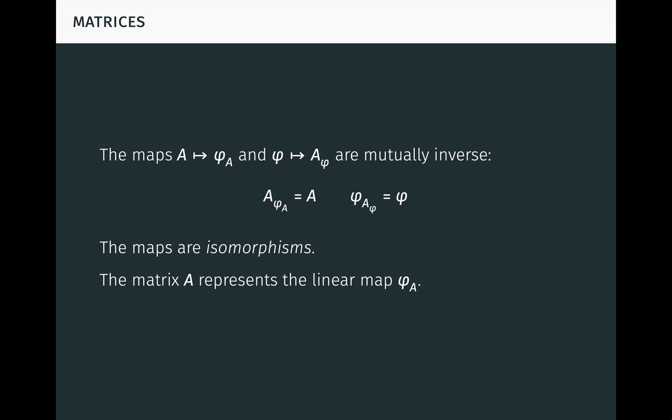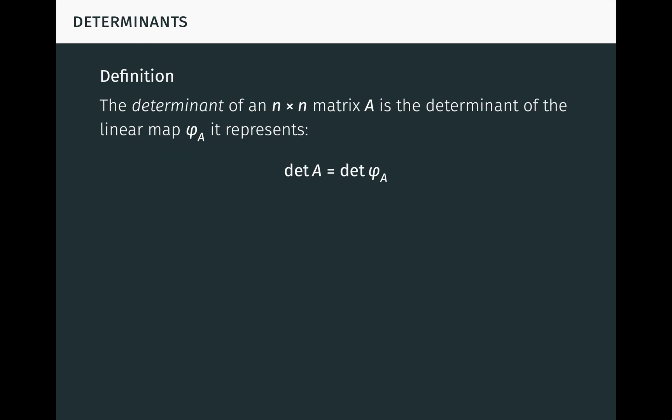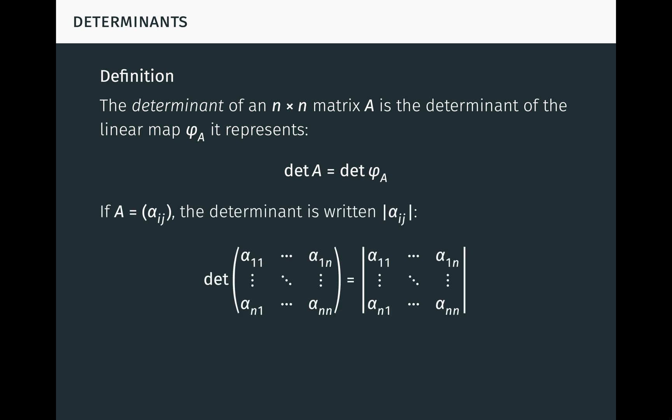This naturally leads us to our definition of the determinant of a matrix. The determinant of an n-by-n matrix A is just the determinant of the linear map φ_A it represents. If A has entries α_ij, the determinant is conventionally written with vertical bars. It's also standard practice to abuse language and speak of the rows and columns of the determinant, even though technically the determinant is just a scalar.